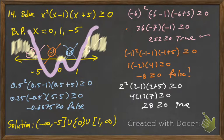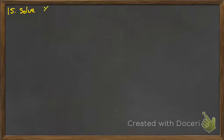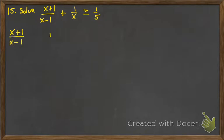The other example we're going to look at is a rational, and it's a little bit more complicated — it wasn't rigged as nicely as some of the ones in the homework, because what we end up with doesn't factor real nicely. This is example number 15: we're going to solve x plus 1 over x minus 1, plus 1 over x, and we want to know when that is greater than or equal to 1 fifth. The first thing we want to do is set it equal to 0 and get a common denominator. With an inequality, we don't know if x minus 1 or x is positive or negative, so we can't just multiply both sides — we'd have to flip the inequality. So instead of clearing fractions, we'll find a common denominator.